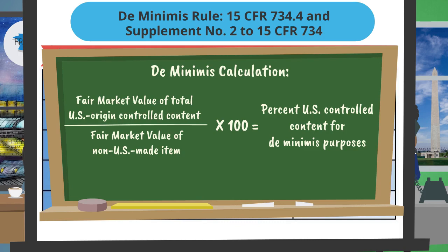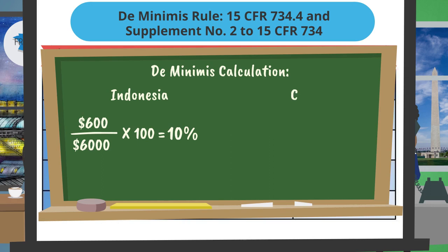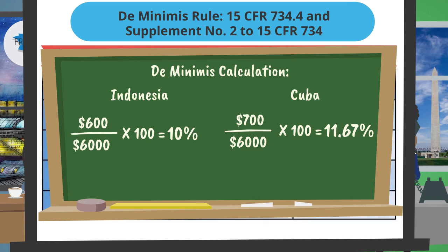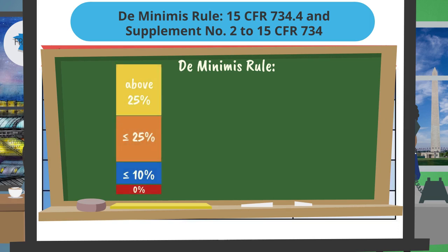A chalkboard appears with the de minimis equation. The results show 10% controlled U.S. content for Indonesia and 11.67% for Cuba. The specific de minimis calculations for both countries appear on the chalkboard, showing $600 divided by $6,000 equals 10% for Indonesia, and $700 divided by $6,000 equals 11.67% for Cuba. François asks: So now that I've practiced my math, what do these percentages mean? A stacked block chart appears with 0%, ≤10%, ≤25%, and above 25% tiers.